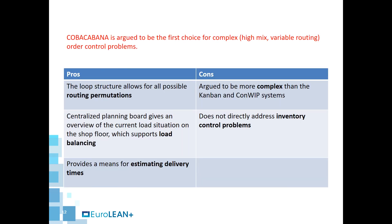COBACABANA is argued to be the first choice for complex high-mix variable routing order control problems, mainly because of its loop structure which allows for all possible routing permutations, its centralized planning board which gives an overview of the current workload situation and supports load balancing, and because it provides a means for estimating valid delivery times. However, some cons of COBACABANA are that it is more complex than Kanban or CONWIP systems, and it doesn't directly address inventory control problems.